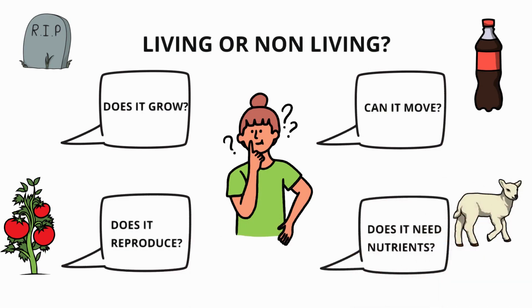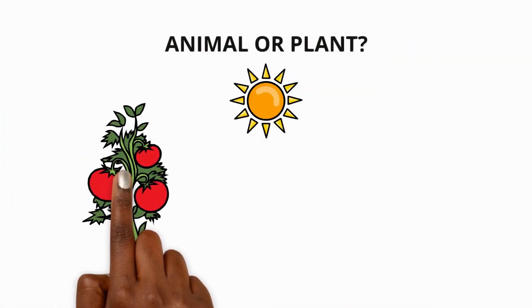Once we know something is alive we can place it into a group with other living things that have the same characteristics. For example a plant group or an animal group. Plants can make their own food while animals cannot.